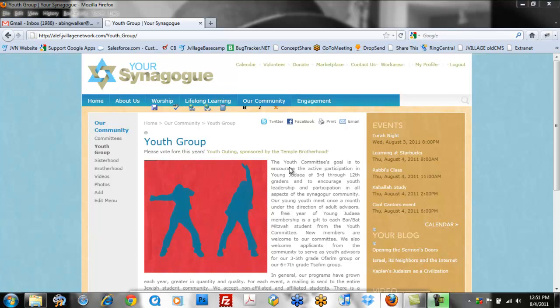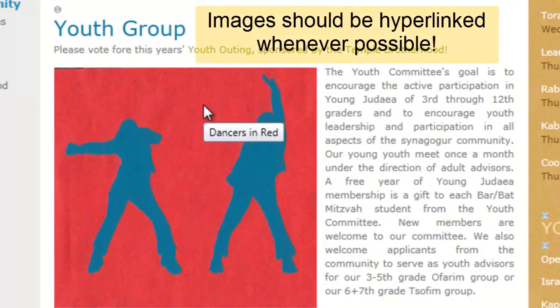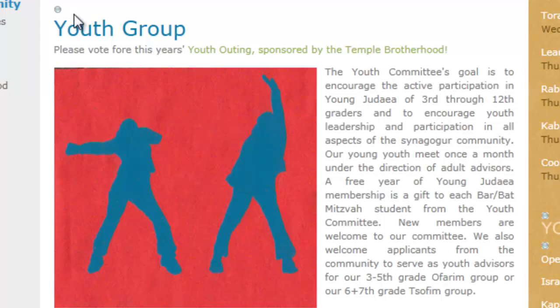Creating a hyperlink out of an image is a good idea, as most people roll their mouse over images and expect them to be clickable. In this case, a link hasn't been set up yet, but it does have a tool tip, such that when you roll your mouse over the image, it lets you know what that image is. 'Dancers in red' is the tool tip for this image. I'll show you how to create a hyperlink and change the tool tip at the same time.